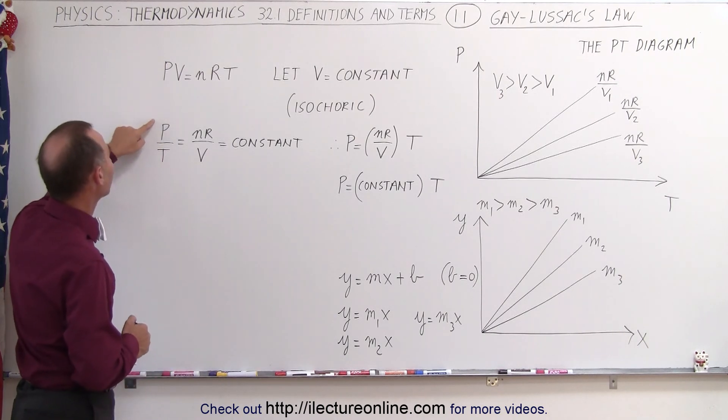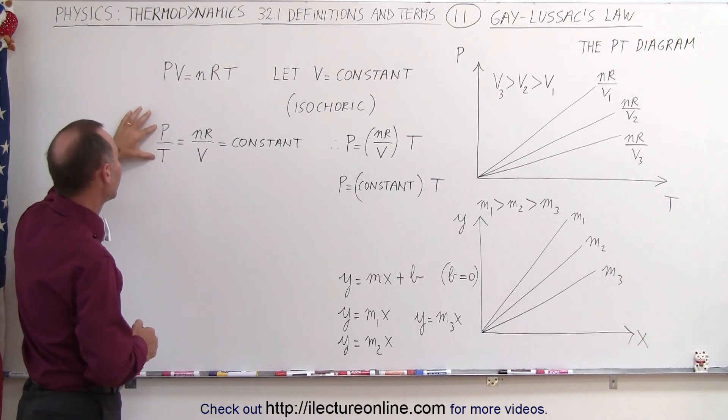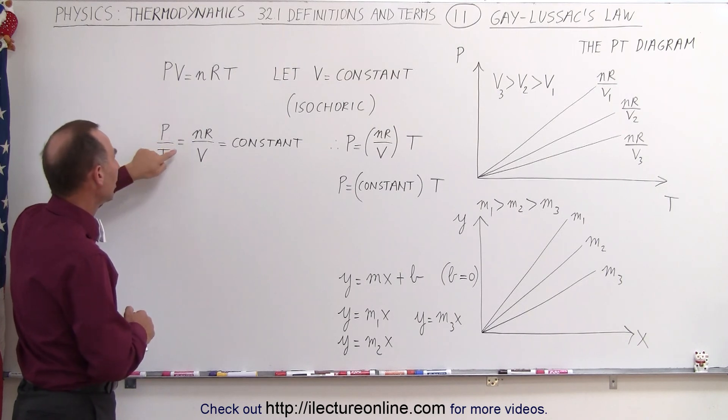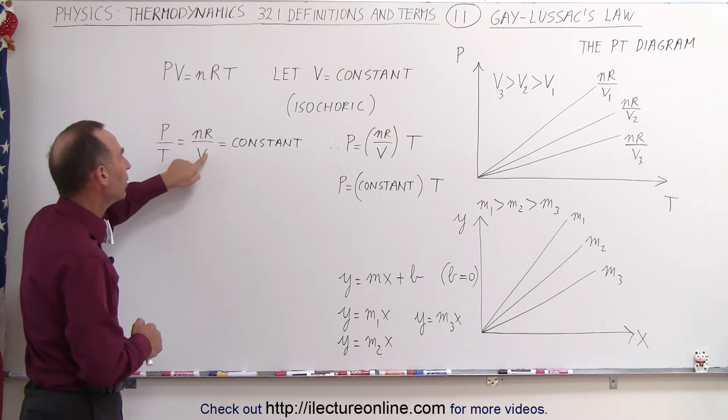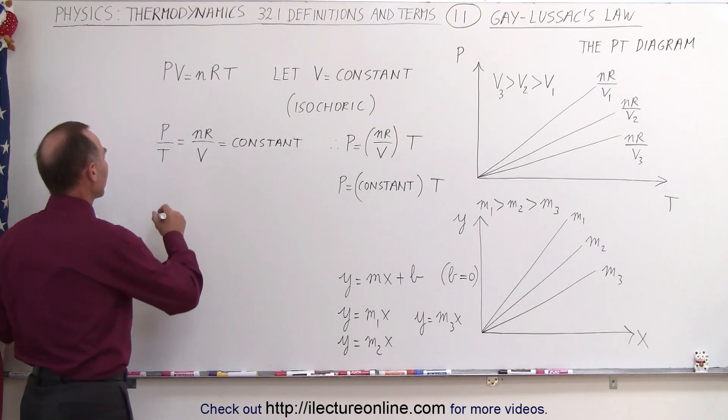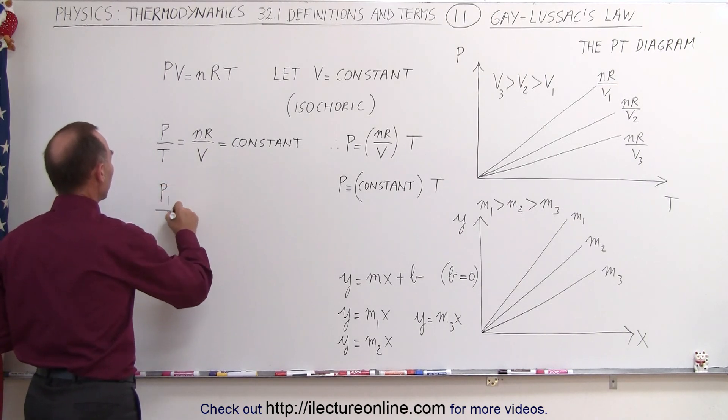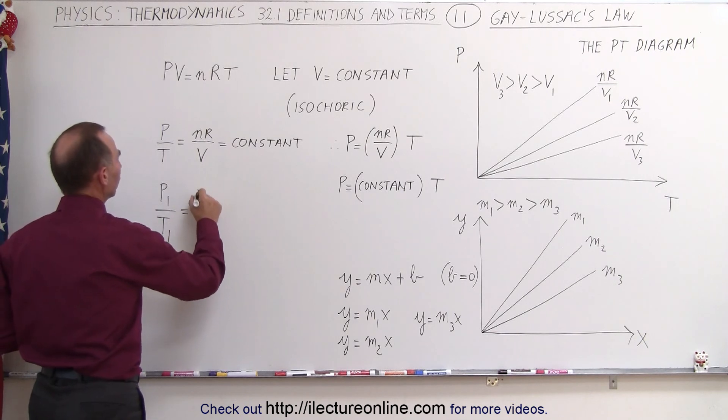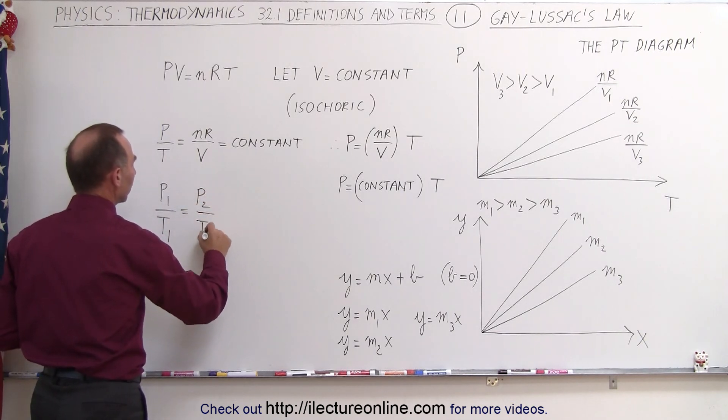So we can then write that P divided by T, the only two state variables that can now change, being equal to nR over V, which is a constant. Which means we can write that P1 over T1 is equal to P2 over T2.